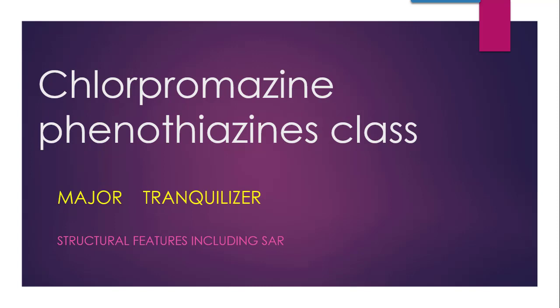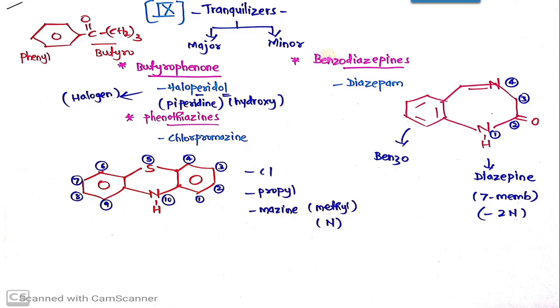Today we are going to talk about the structural features including SAR of Chlorpromazine. Tranquilizers are basically divided into two types: major and minor. Minor tranquilizers are basically benzodiazepines and major tranquilizers have two classes.